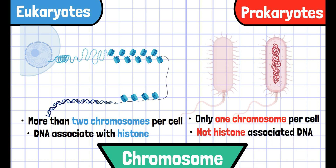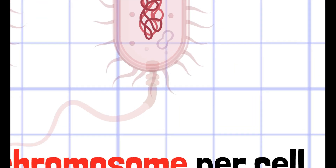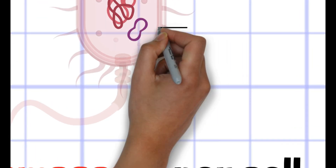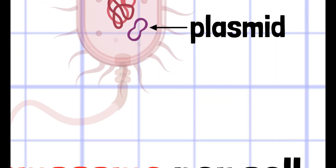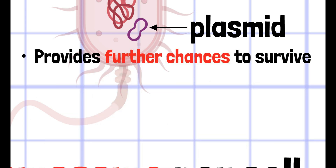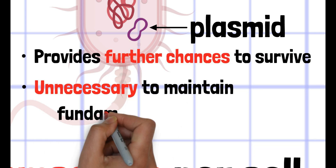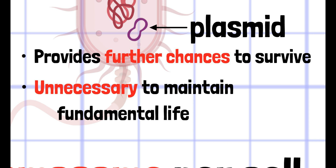So far, the differences we've talked about were structures present in eukaryotes but not in prokaryotes. However, plasmid is the opposite case. Plasmid only exists in prokaryotes, which provides further chances of survival, although they are not necessary to maintain fundamental metabolism.